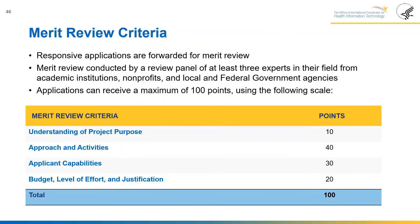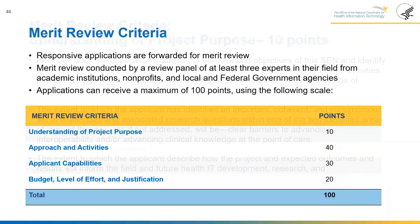Merit review: responsive applications are forwarded for merit review conducted by a review panel of at least three experts from academic institutions, non-profits, and local and federal government agencies. Applications can receive a maximum of 100 points: understanding of project purpose, 10 points; approach and activities, 40 points; applicant capabilities, 30 points; budget, level of effort and justification, 20 points.